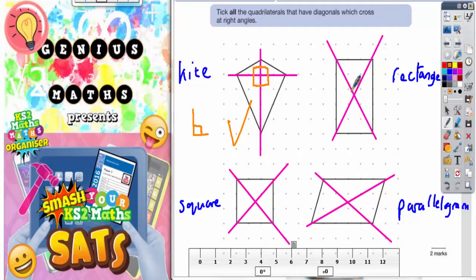On the rectangle, these two angles are acute, less than 90, and these two angles are obtuse, which are bigger than 90. So that one, you don't need to tick.